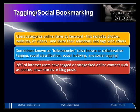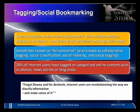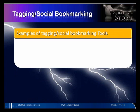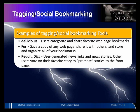About 28 percent of internet users have tagged or categorized online content such as photos, news stories, or blog posts. Internet users are revolutionizing the way we classify information. Examples of tagging and social bookmarking tools: the most popular is probably Delicious — users categorize and share favorite web bookmarks. Furl lets you save a copy of any web page and share it with others. Reddit and Digg are user-generated news links where other users vote on their favorite story to promote stories to the front page.